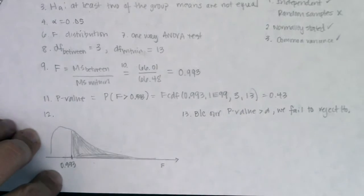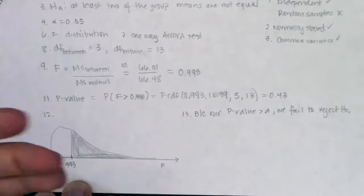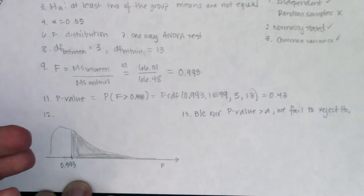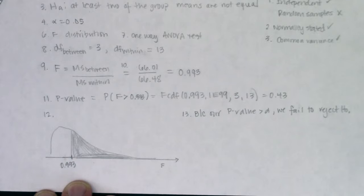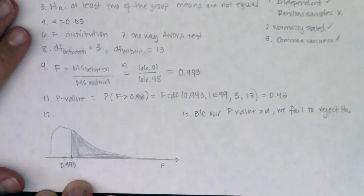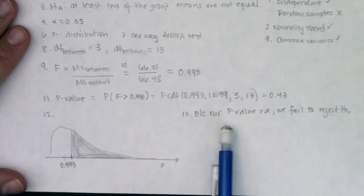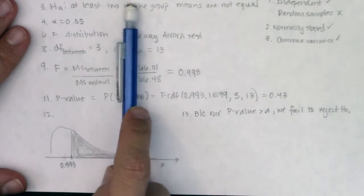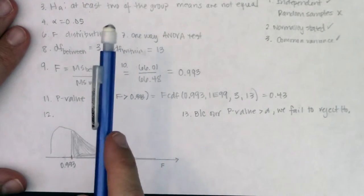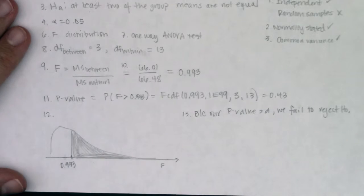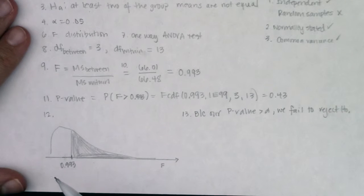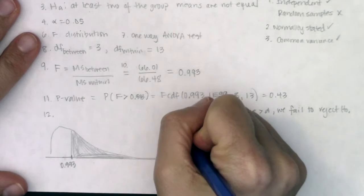Because we failed to reject the null, we might potentially be making a Type 2 error, and we can say our results are not statistically significant. In context: there is not sufficient evidence of a difference between the four brands of detergent in regards to average whiteness readings after washing.